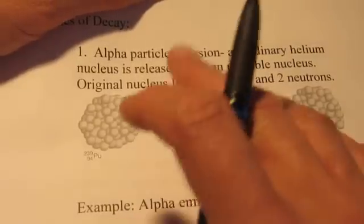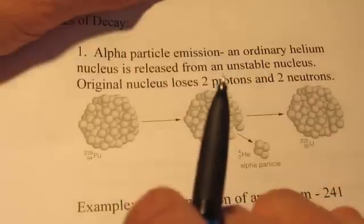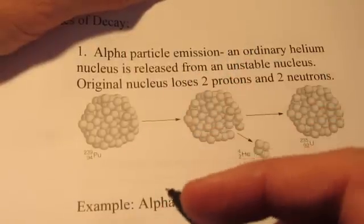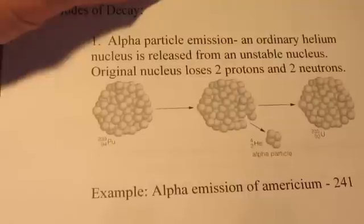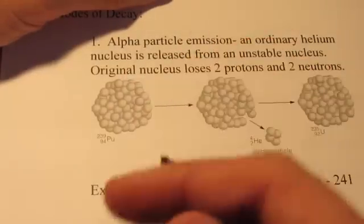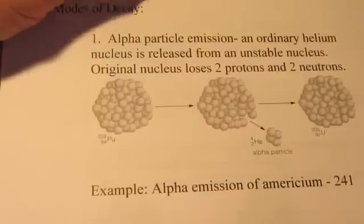Well, as those atoms get bigger and bigger, and as the proton to neutron ratio changes, they can become unstable. And some of the atoms become so unstable, they start ejecting protons or neutrons or other particles in an attempt to stabilize themselves.